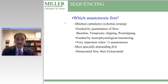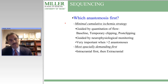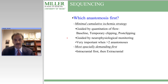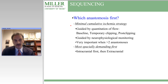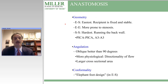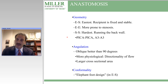Regarding which anastomosis to do first: generally the intracranial anastomosis is best done first, as it is usually the more difficult of the two and the limiting one with respect to graft length. Generally when more than one anastomosis is done, it is essential to strategize so that the least ischemia is incurred on the intracranial circulation. There are many details about geometry, angulation, and conformality of anastomosis — too many to fully discuss in this webinar.